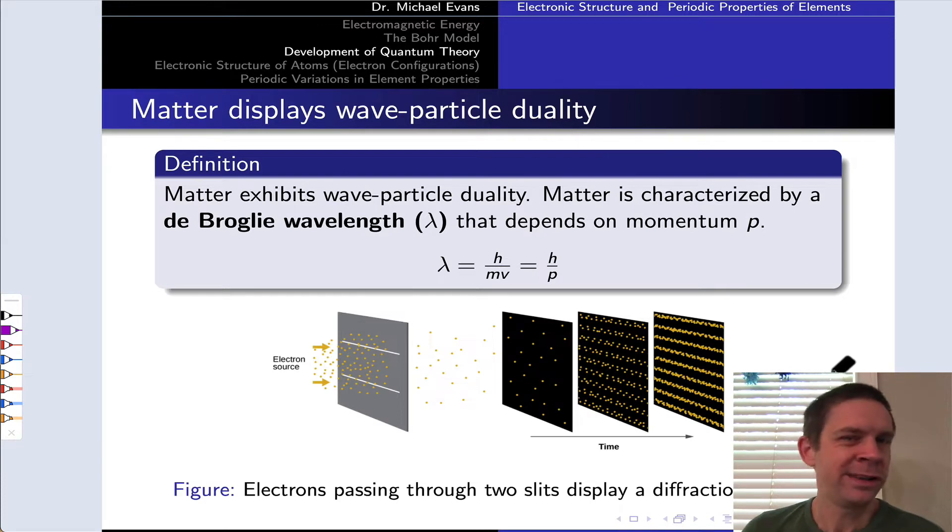The quantum model is really an extension of Bohr's model in that it starts from Bohr's observations, Bohr's ideas, and provides deeper explanations of why the atom behaves the way it does.